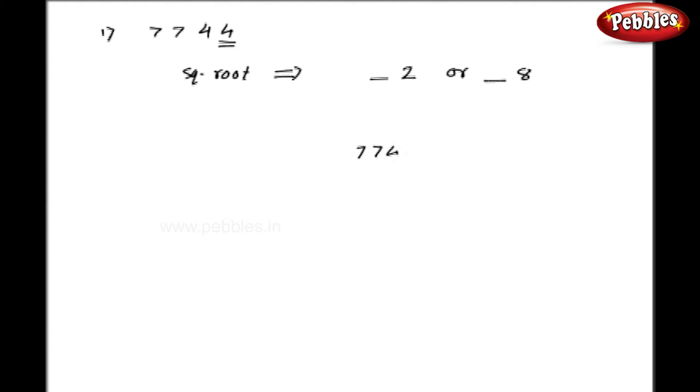Now, my figure 7744 lies between the perfect squares 80 or 90, that is 6400 or 8100. So, my square root will be between 80 and 90. So, it can be either 82 or 88.